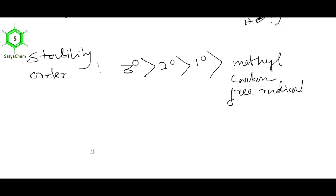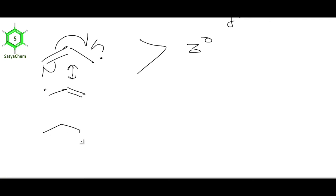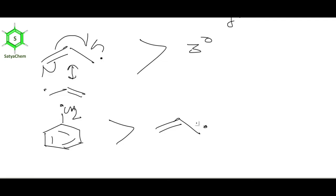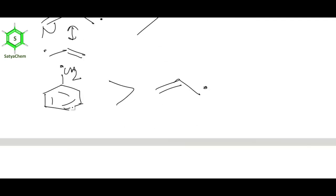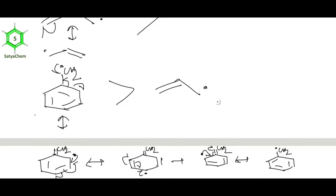If resonance is possible, the carbon free radical will be more stable. Allyl free radical is more stable than 3° carbon free radical because resonance is possible — the unpaired electron is delocalized. In a similar way, benzyl free radical is more stable than allyl free radical because it has more resonance structures (5 for benzyl vs. 2 for allyl). So the stability order including resonance-stabilized ones is: benzyl > allyl > 3° > 2° > 1° > methyl free radical.